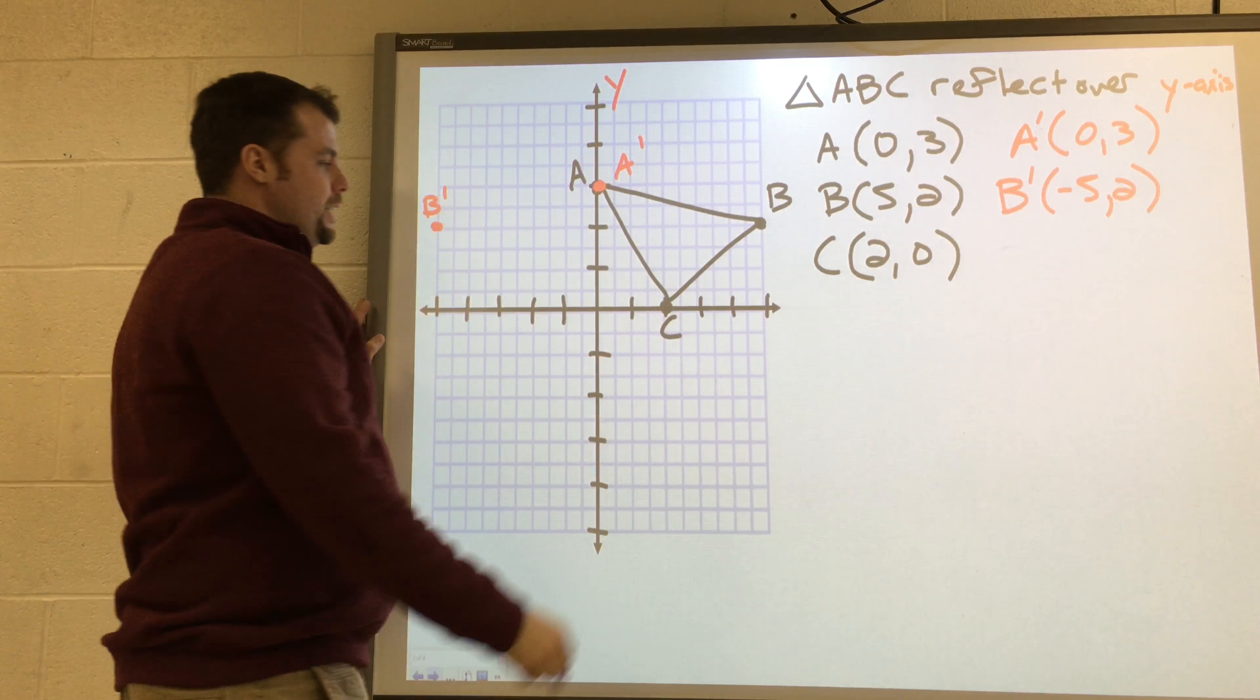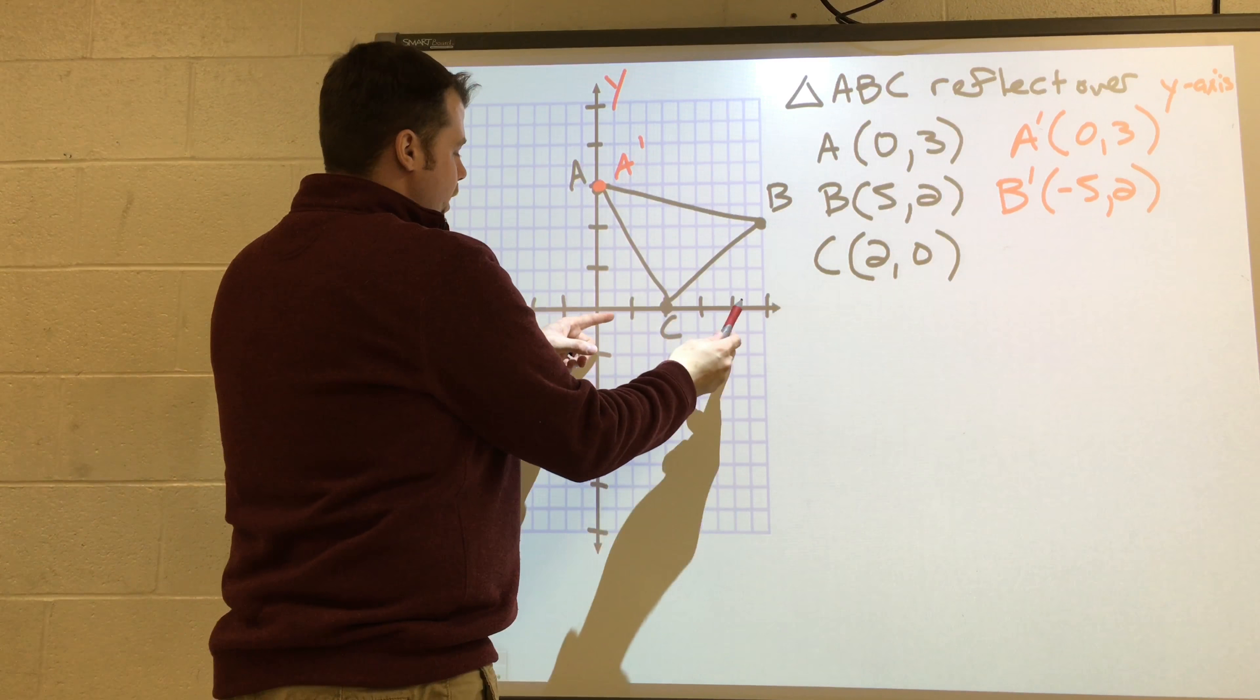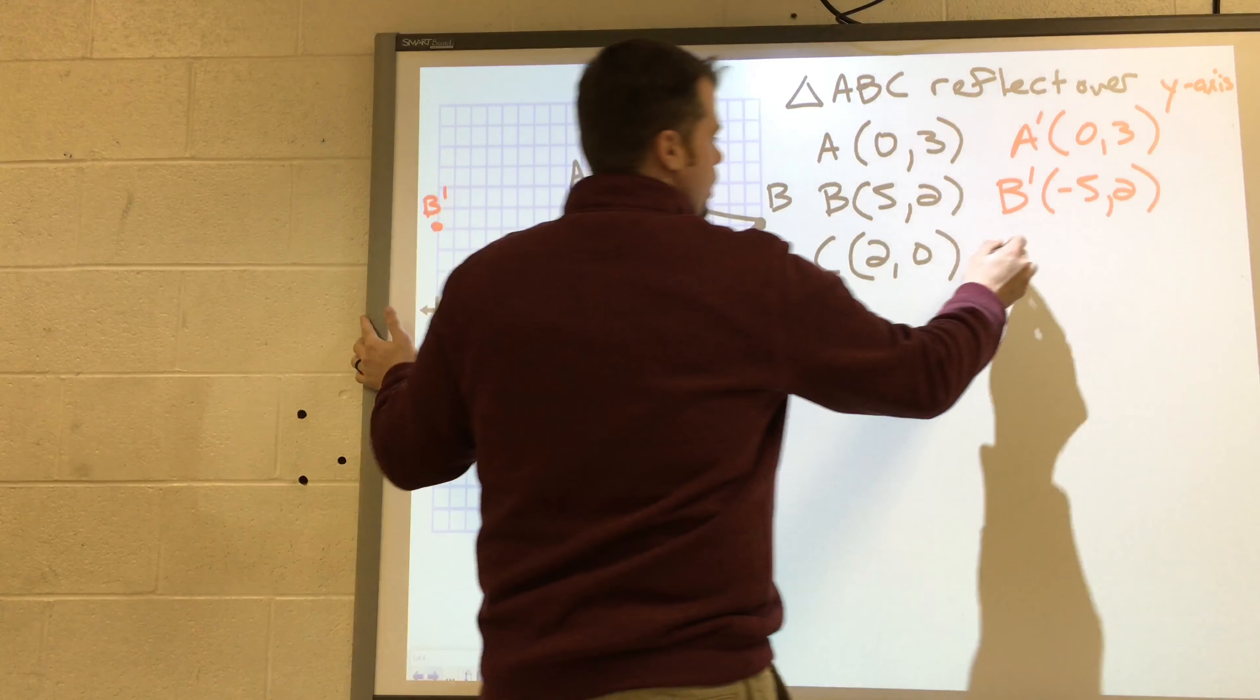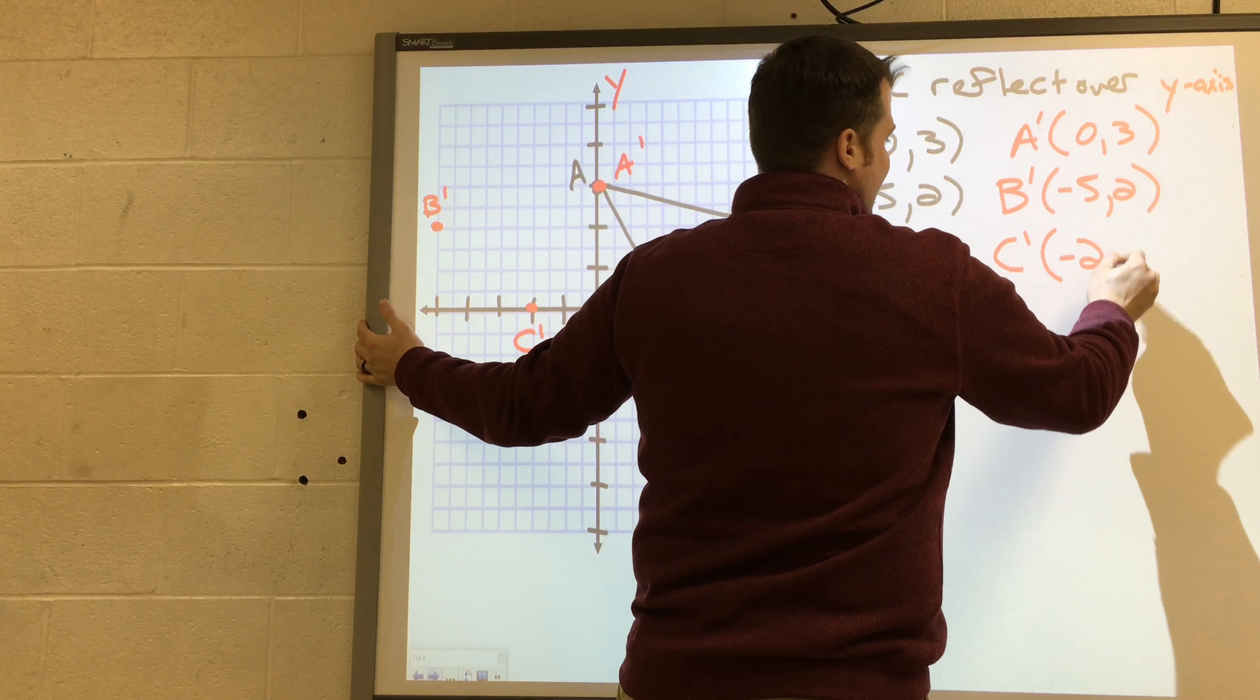And then we have C, which is two units to the right. It's going to move two units across to the left. That'll be C prime. And the point is negative two, zero.